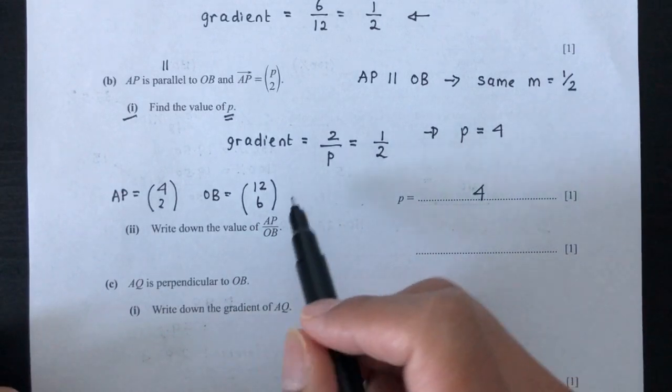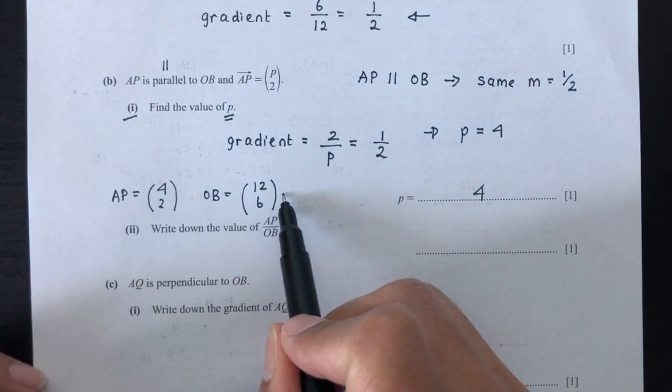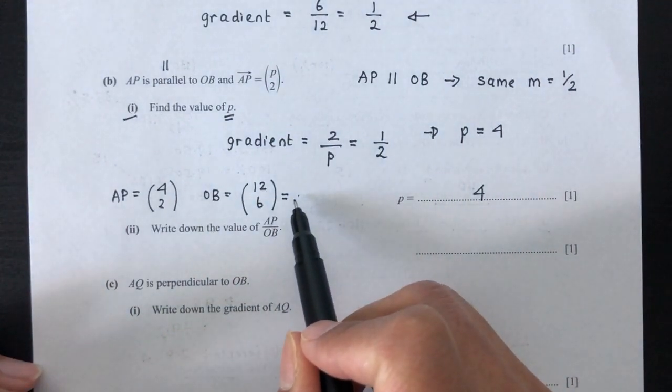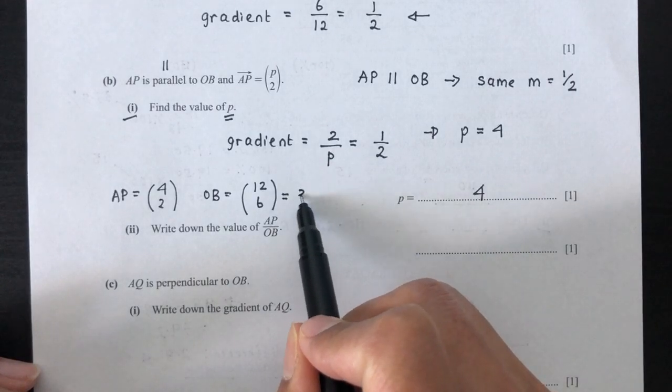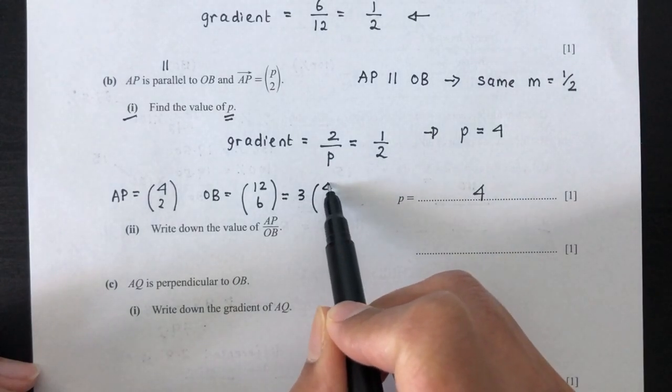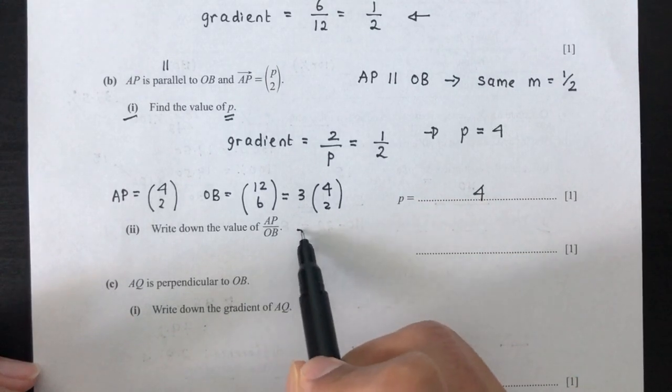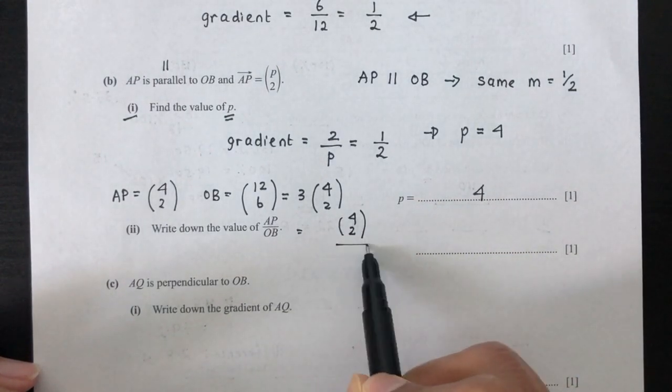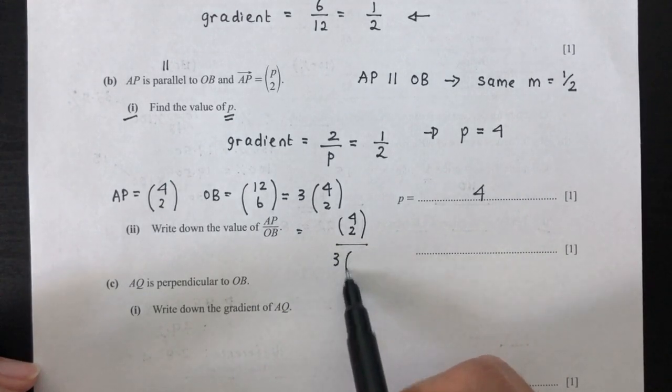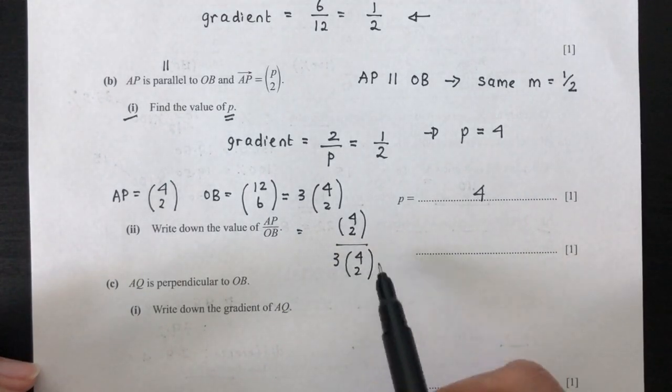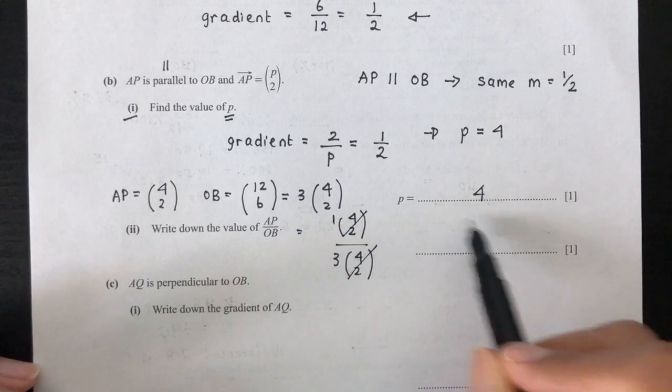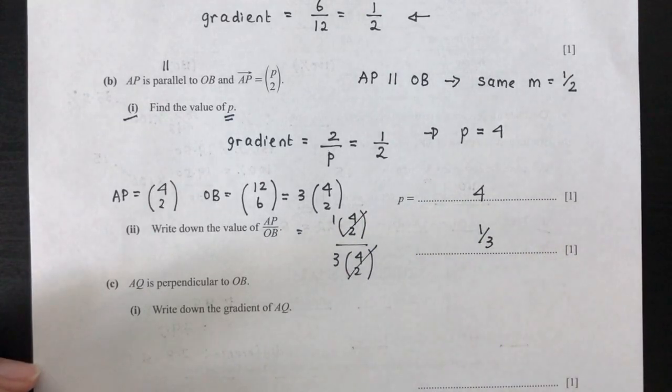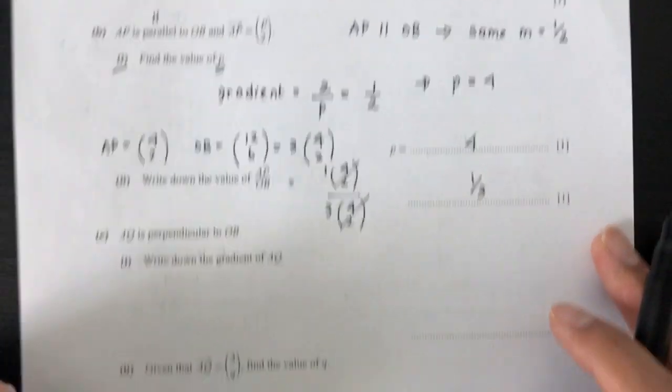So now if you want to factorize this, we can try to take 3 out. Divide, you will have 4 and 2. So divide, you will have AP on top, which is 4, 2, and OB on the bottom, 3, 4, 2. That will be going away, so the answer is 1 over 3 for your value of this ratio.